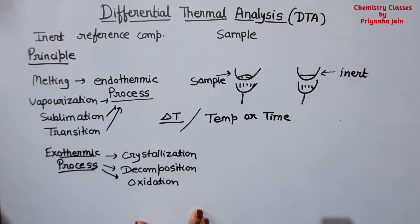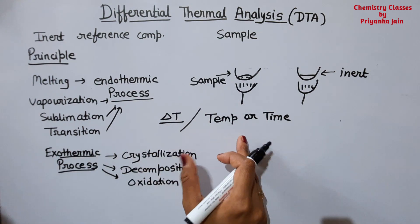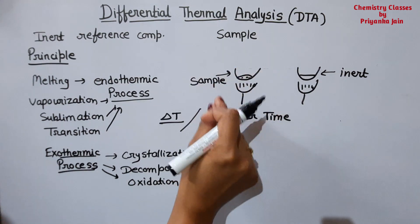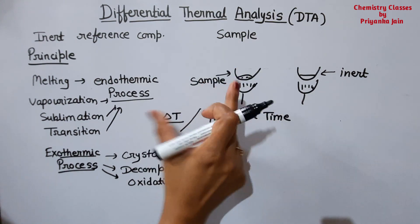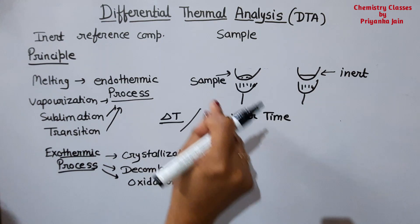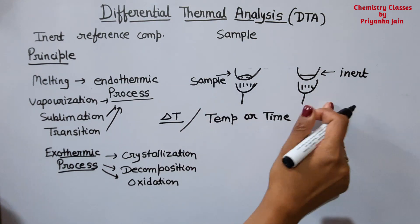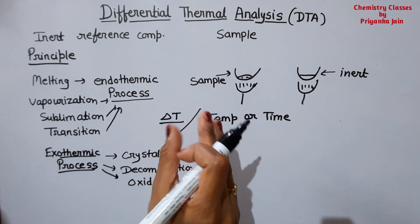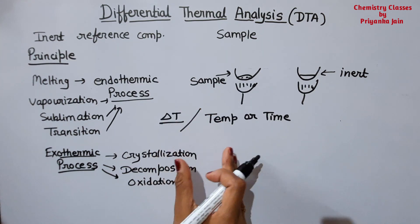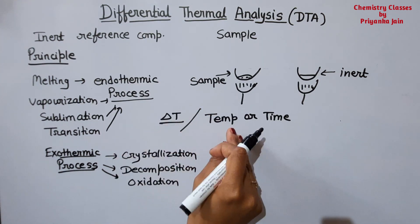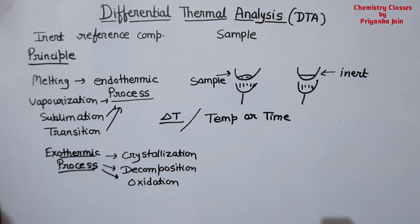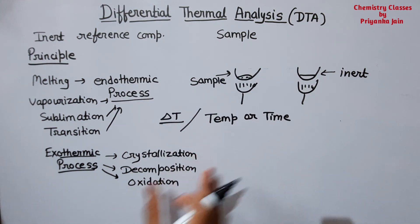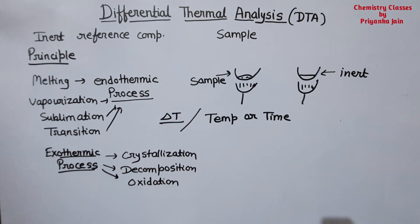In all these exothermic processes, heat is evolved, so the temperature of the sample will increase. Its temperature will be higher than the reference, so again we get a temperature difference ΔT, and we can plot this against temperature or time. In this way we get a curve.